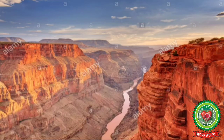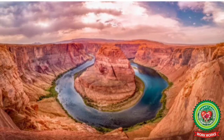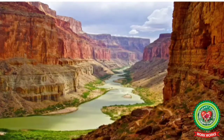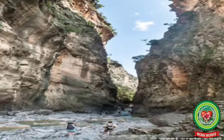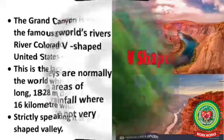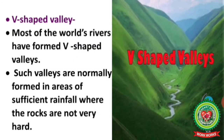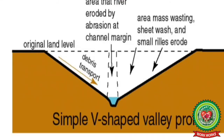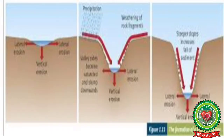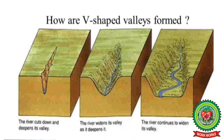The Grand Canyon formed by the River Colorado in the USA is the largest canyon in the world — 480 kilometers long, 1828 meters deep, and 6 to 16 kilometers wide. Strictly speaking it is a V-shaped valley, so gorges and canyons are V-shaped valleys. V-shaped valley — most of the world's rivers have formed V-shaped valleys, normally in areas of sufficient rainfall where rocks are not very hard; down-cutting and lateral cutting are done simultaneously by the river to form a V-shaped valley.